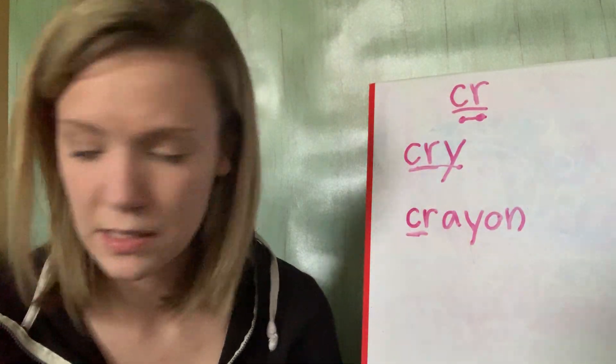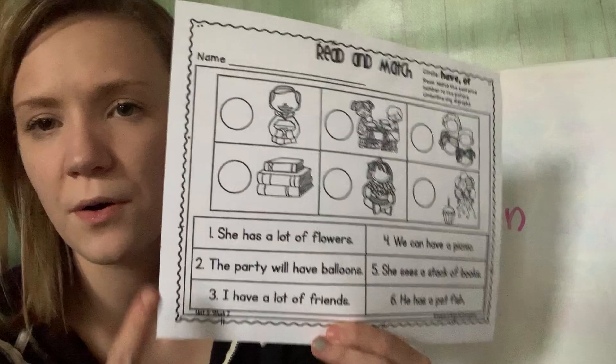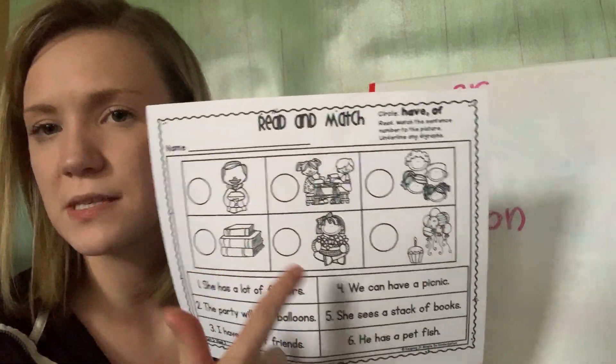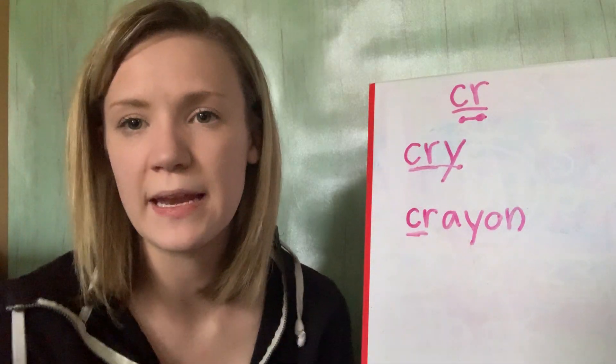Okay. So those, you have those, and then you have another read and match. So read the sentences, write the number beside the picture that matches it in that little circle. And then you have a new writing page.